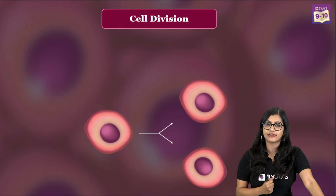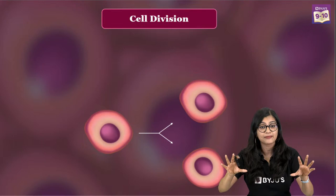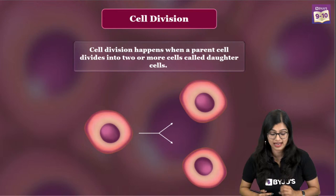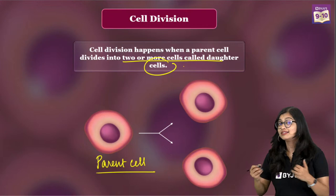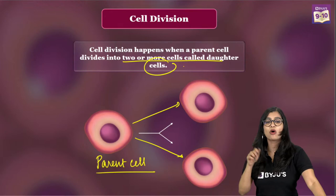Let's understand the ideology of cell division with a simple analogy. When we get a wound or lose skin cells they get replaced — that happens by a process called cell division. Cell division can be simply defined as the process where a single cell gives rise to two or more cells, which we call daughter cells. One cell acts as a parent cell, it undergoes certain processes, and gives us two daughter cells.